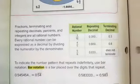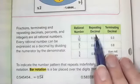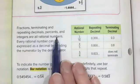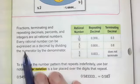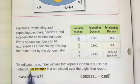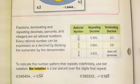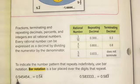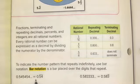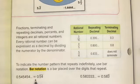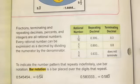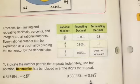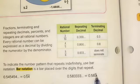In the next table we have rational numbers, repeating decimals, and terminating decimals. Fractions, terminating and repeating decimals, percents, and integers are all rational numbers. Every rational number can be expressed as a decimal by dividing the numerator by the denominator. To indicate the number pattern repeats indefinitely, we use bar notation. Bar notation is placed over the digit or digits that repeat. For example, 0.545454 written in bar notation would be 0.54 with the bar over both the 5 and the 4. When we have 0.583333 and only the 3 repeats, we write 0.583 with the bar over the 3 only.